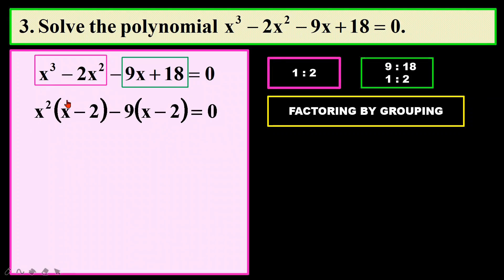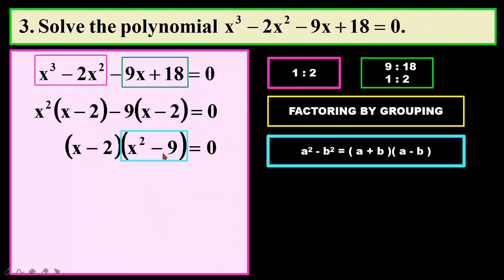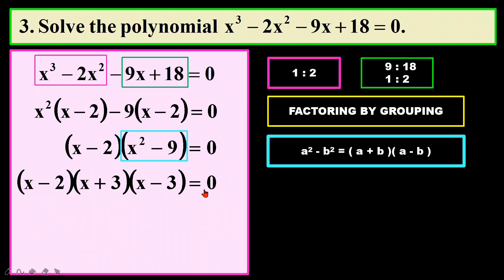For the second part, I bring out 9 with a negative sign, so it transforms to negative, giving 2 as balance. The ratio of 1 to 2 can be seen. So x minus 2 and x minus 2 can be factorized out. Once that is done, I have x squared minus 9 remaining. I notice that 9 is 3 squared, so I can use the difference of squares formula. I can still factorize this and will get x minus 2 from the first part, and x plus 3 and x minus 3 for the second part.